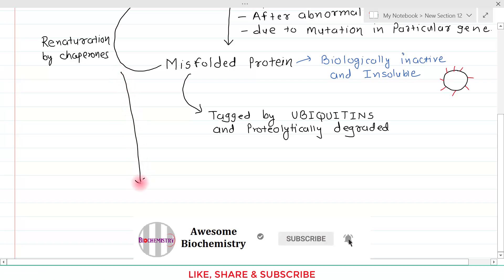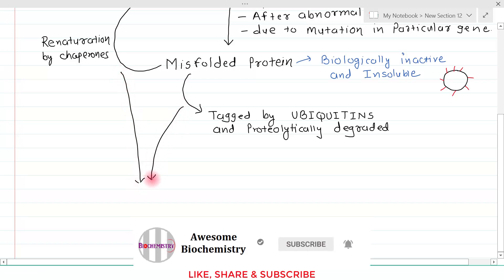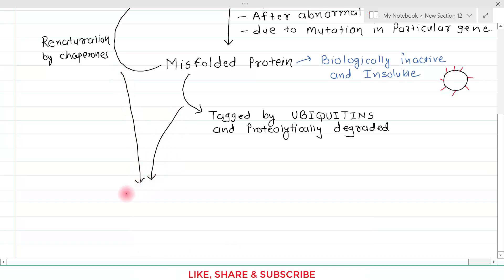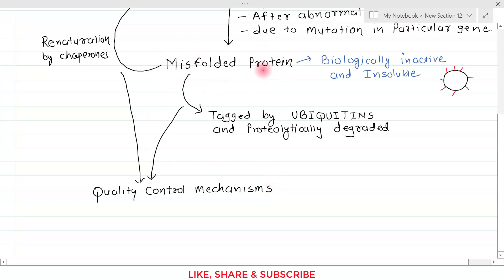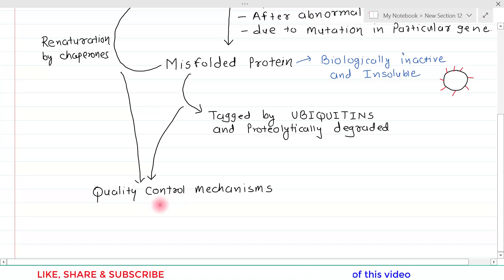These two systems — renaturation and tagging-and-degradation — can both be called a quality control mechanism, because by this mechanism the bad quality protein is taken care of and our body is able to get rid of such misfolded protein.